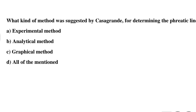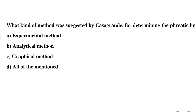Question 18: What kind of method was suggested by Casagrande for determining the phreatic line? Option A: experimental method, Option B: analytical method, Option C: graphical method, Option D: all of the above. The correct answer is Option C: graphical method.